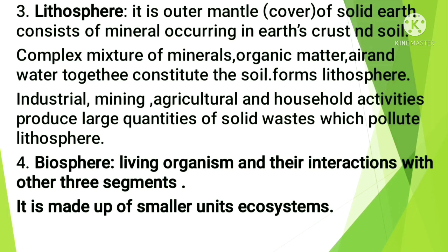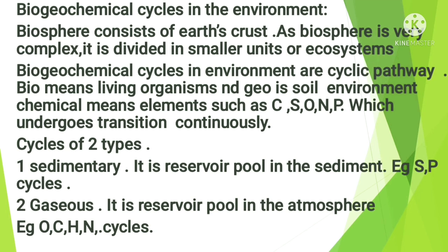Now we discuss biogeochemical cycles in the environment. Ecosystems can be divided into biotic (living) and abiotic (non-living) components. Biogeochemical cycles are cyclic pathways in which a regular and continuous transition of elements occurs from the environment. The word 'biogeochemical' breaks down as: bio — living organisms; geo — soil/environment; and chemical — elements such as carbon, sulfur, and phosphorus, which undergo continuous transition.